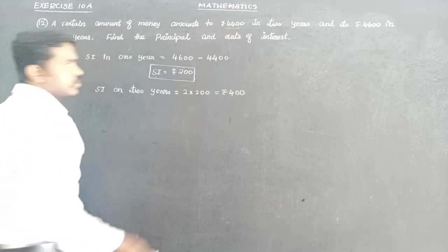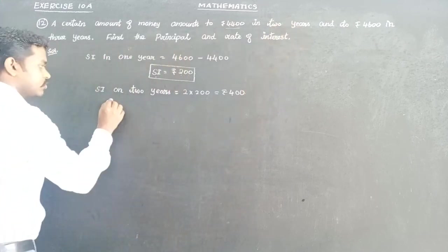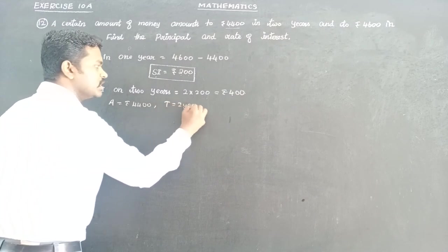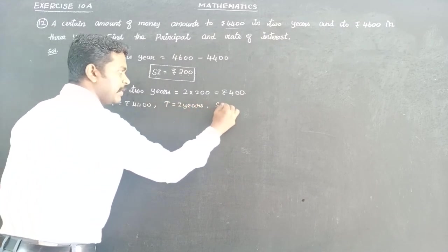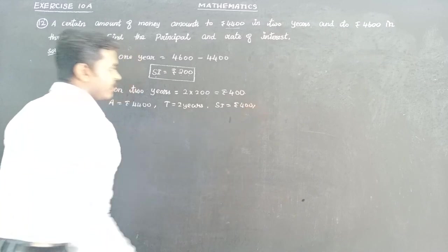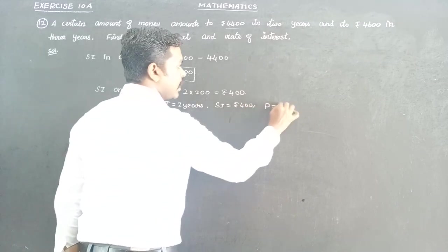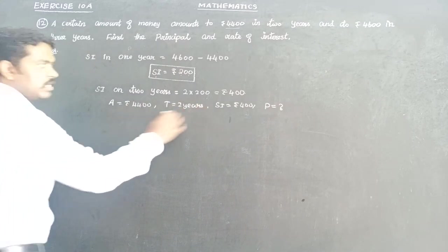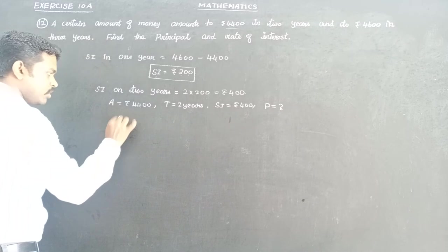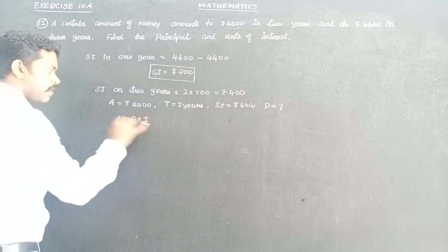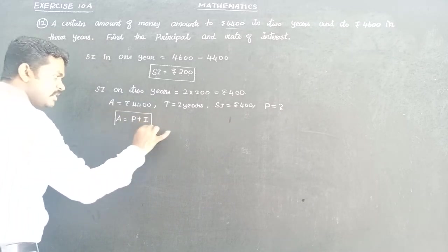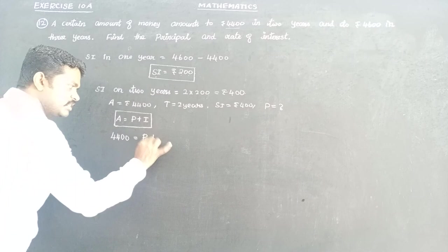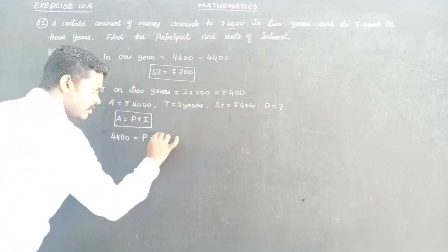Amount is 4,400 and time duration is two years. The simple interest for two years is 400. So using the formula: Amount = Principal + Simple Interest, we get 4,400 = Principal + 400.